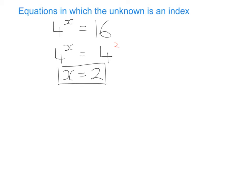If we try another quick question: if we have 3 to the power of x equals 81, again we're trying to work out how many times 3 multiplied by itself gives us 81. Our method is always to write them with the same base number, so we leave 3 to the power of x on the left hand side, and we see if we can write 81 with 3 as the base number. We discover that 3 to the power of 4 — so 3 multiplied by 3 multiplied by 3 multiplied by 3 — equals 81, and we can equate the indices, therefore x equals 4.